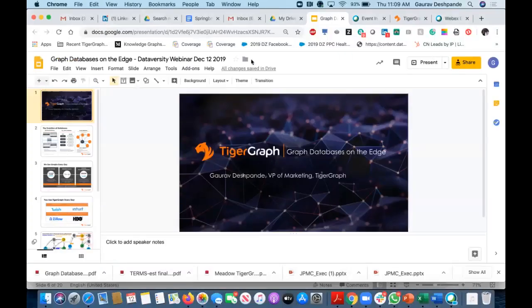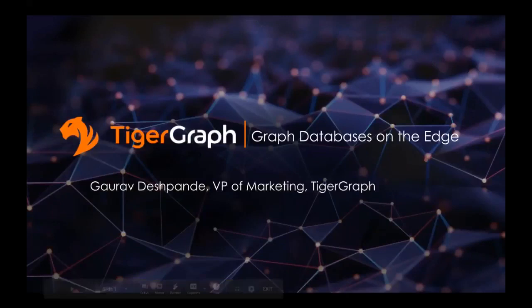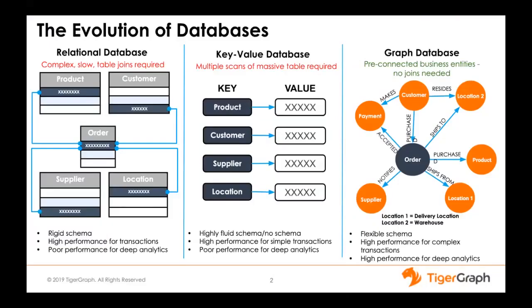In the interest of time, I'm Gaurav Deshpandi, Vice President of Marketing, and thank you for this opportunity. Thank you to the hundreds of you who've taken time to join us. One of the most common questions I get is: what is a graph database? How is it different from a relational database like Oracle? How is it different from a key-value database like MongoDB? This chart shows you those differences.